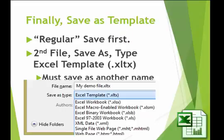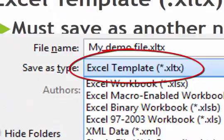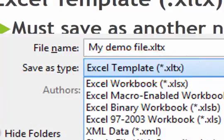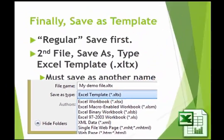When you make a template, you'll just save it as a regular Excel file first because you might need to change it later, or you might not like the way you did it. Then you make a second file using File, Save As, Type of File, and choose Excel Template, which is .xltx for a template file. From then on, every time you open the template file, you'll have to save it as another name — give it a name of whatever it is that you're going to be doing. Or if you just want to print it off, you can do it from there.